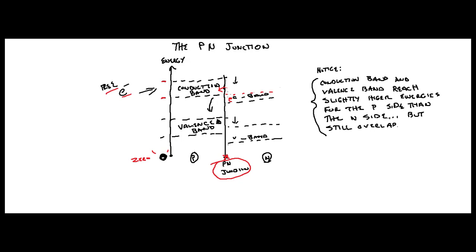Once all electrons in the overlap region have moved across, you're going to have no electrons in that overlap area anymore. Effectively, the overlap region is gone. Here's your new conduction band. Now, for this electron to migrate across into the conduction band, it's going to require energy, because it has to increase its energy to get across the P-N junction into the conduction band in the P-region. The same thing happens in the valence band — the overlap there is also gone. However, the band gap — the distance between the valence band and the conduction band — still remains the same.